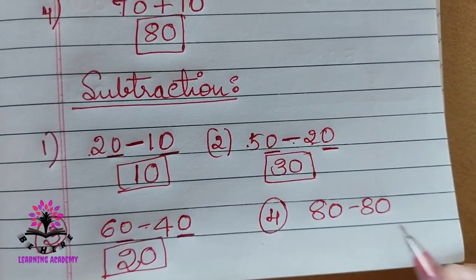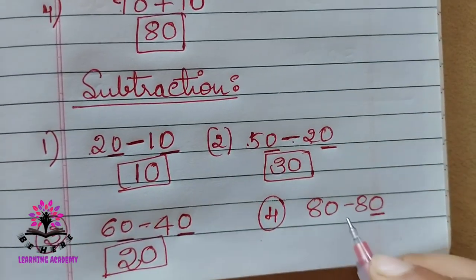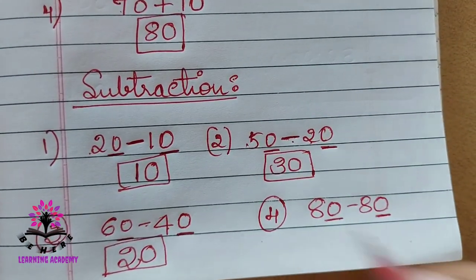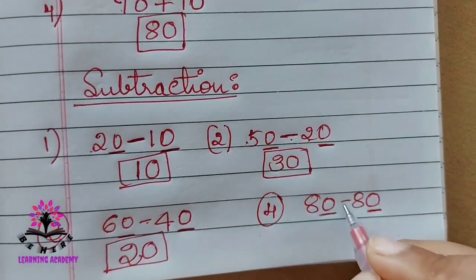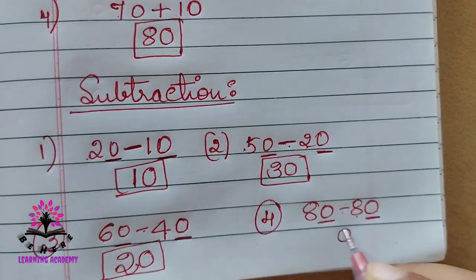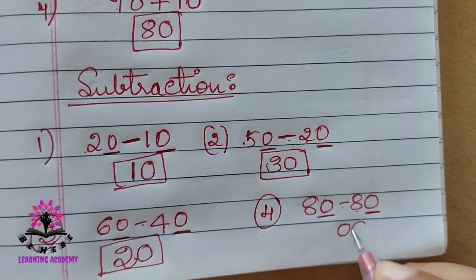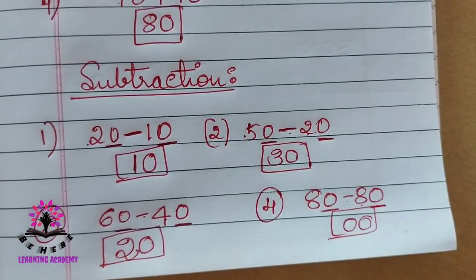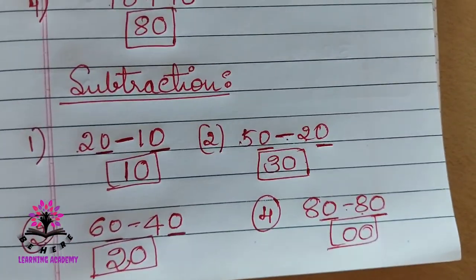80 minus 80. Zero in the unit place for both. Eight minus eight is zero. This is also zero — so the answer is zero.